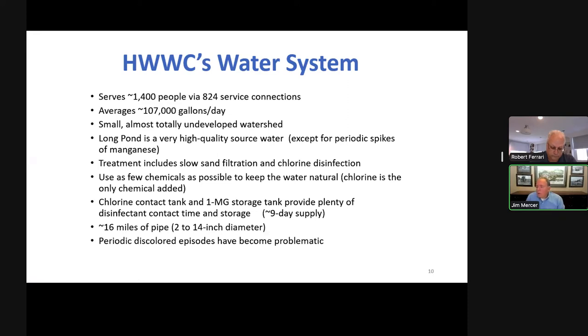Housatonic Water serves about 1400 customers. We average about 107,000 gallons a day. We have a largely undeveloped watershed. We have a high quality water, except for periodic spikes of manganese. Treatment includes slow sand filtration and chlorine disinfection. We use as few chemicals as possible to keep the water natural. Chlorine is the only chemical that we add at this point. The chlorine contact tank and million gallon storage tank provide disinfection and contact time. We have 16 miles of pipe which varies from 2 to 14 inches in diameter and we have periodic problems of discolored water which you're all aware of.